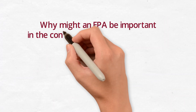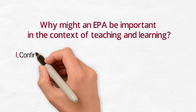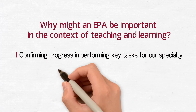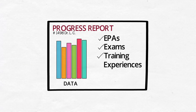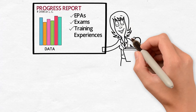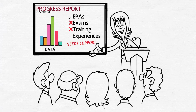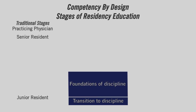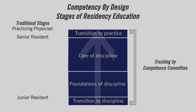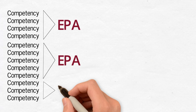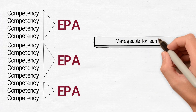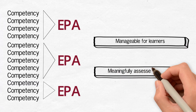Why might an EPA be important in the context of teaching and learning? Two reasons: first, confirming progress in performing key tasks of our specialty. In CBD, we want to be sure that each resident can competently perform key tasks. By tracking them, a competency committee will have information to confirm who is making progress as expected and to identify early on if someone needs more support in a given area. Residents are to achieve, and teachers are to ensure, that the EPAs are achieved by the end of each stage of training. An EPA represents the integration of a large number of competencies into a manageable number of activities for learners and supervising faculty to meaningfully assess during the training program.